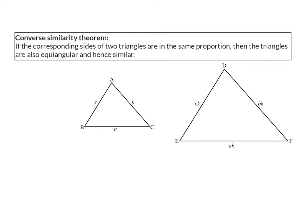So the Converse Similarity Theorem says: if the corresponding sides of two triangles are in the same proportion, then the triangles are also equiangular and hence similar. The 'if' part is that AB over DE will have the same ratio as AC over DF, and also the same ratio as BC over EF.